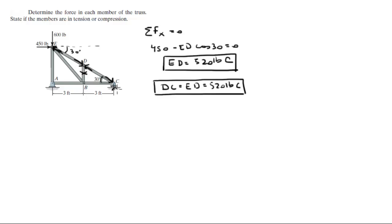This can only have a vertical reaction going up. So this is going to the right, this has to be going to the left, which makes this going to the right. This is a zero-force vector, which will make this one also a zero-force vector. This one is going to the left, this one is going to the right.